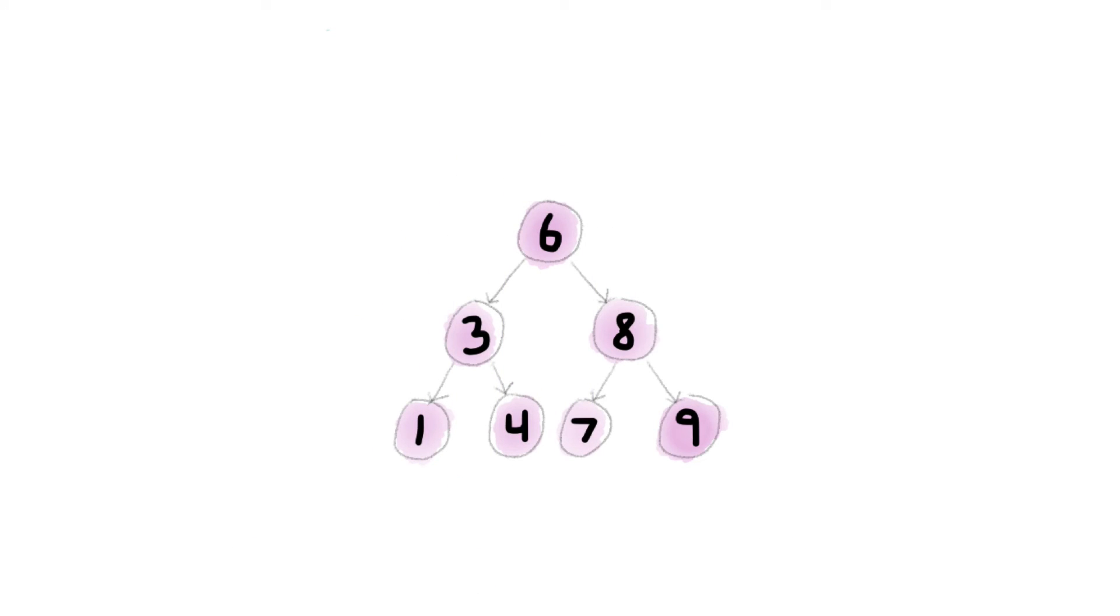You can pull a sorted array out of a binary search tree with a surprisingly simple three-step procedure. On every item of the tree, first, recursively do the same procedure on the left child. Then, when that call is done, push the item into an array. Lastly, call the procedure recursively on the right child.